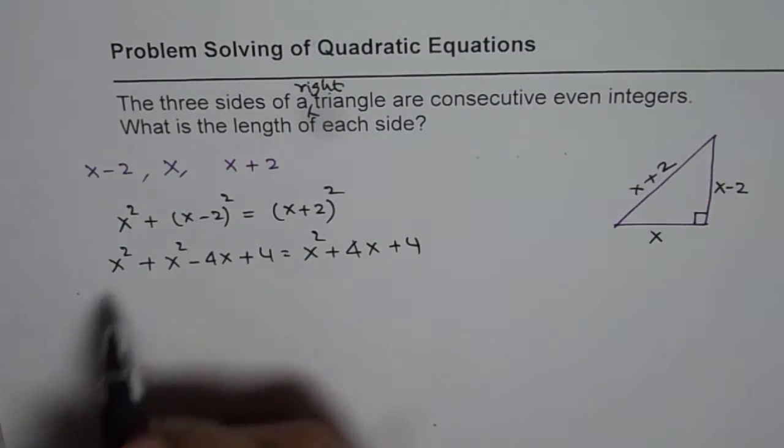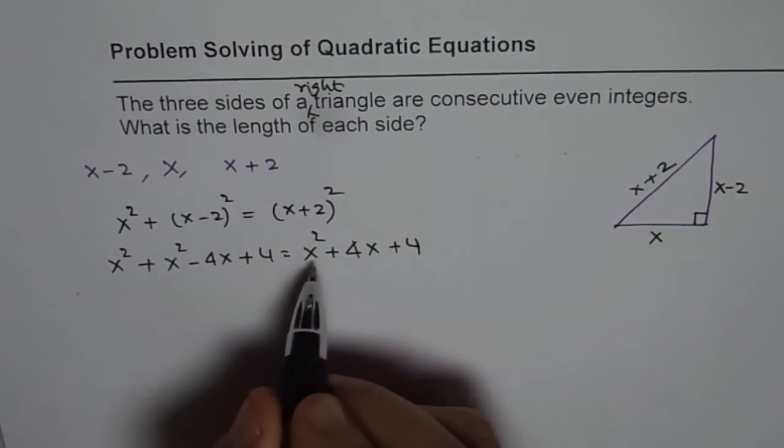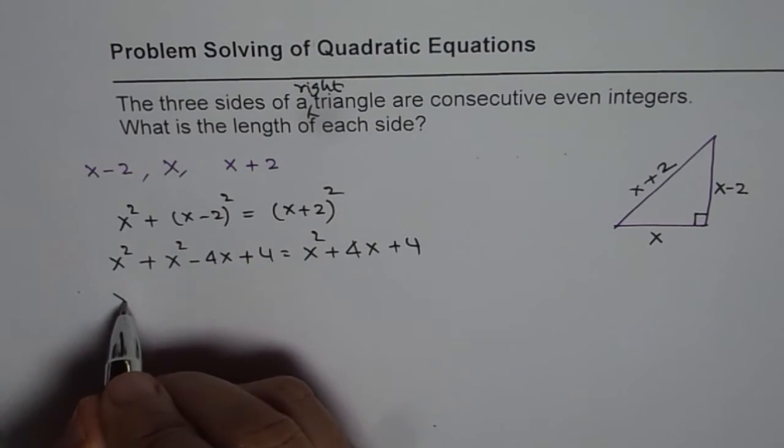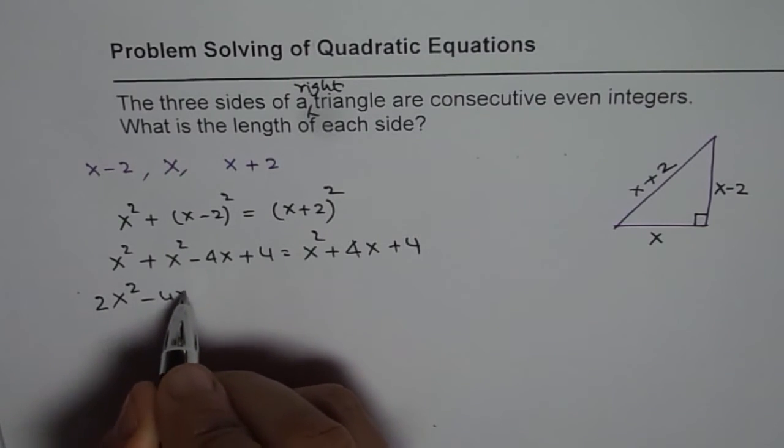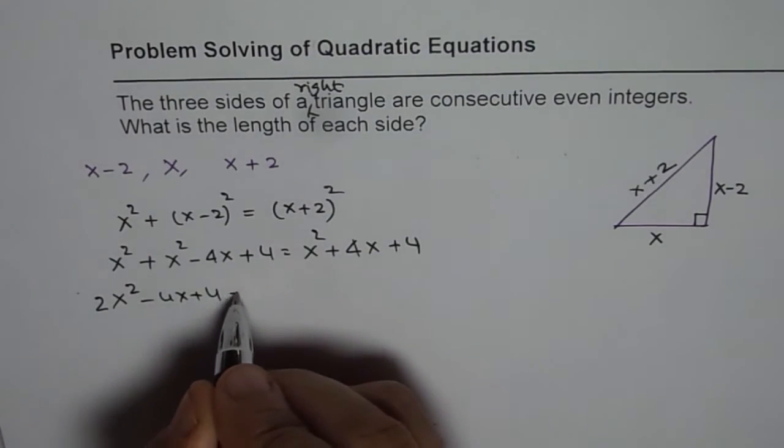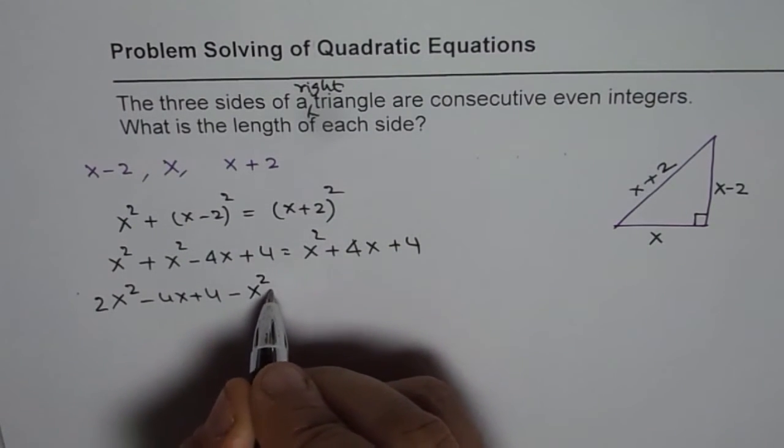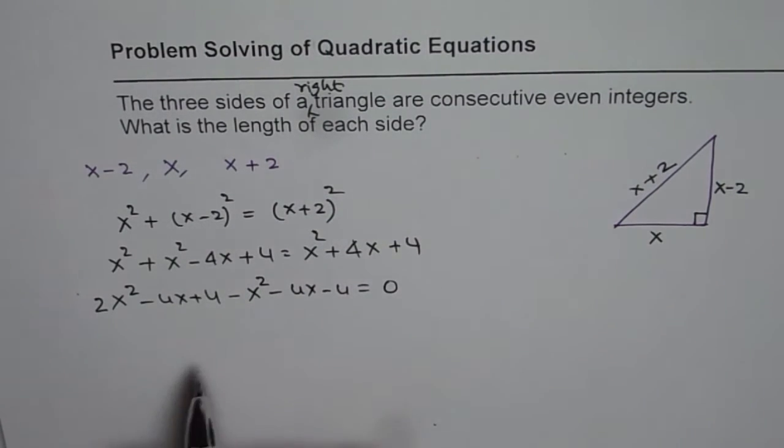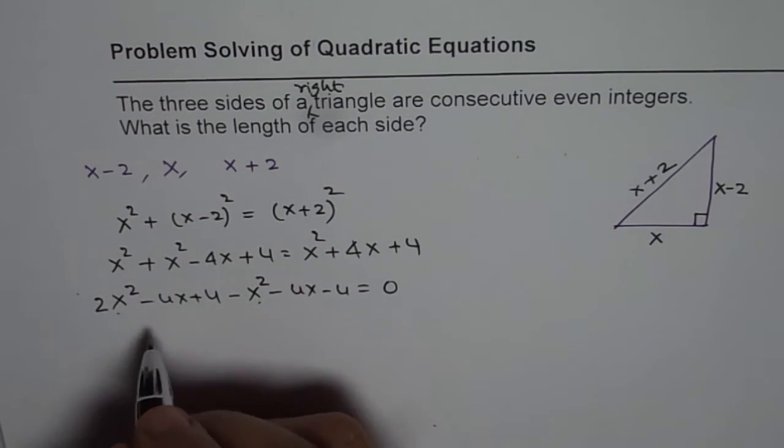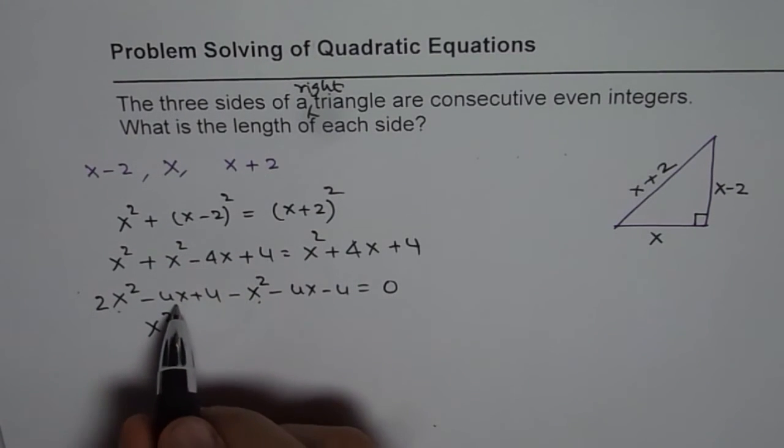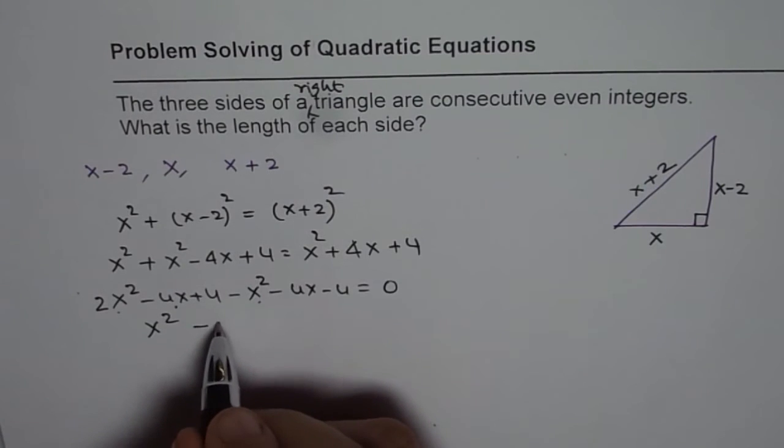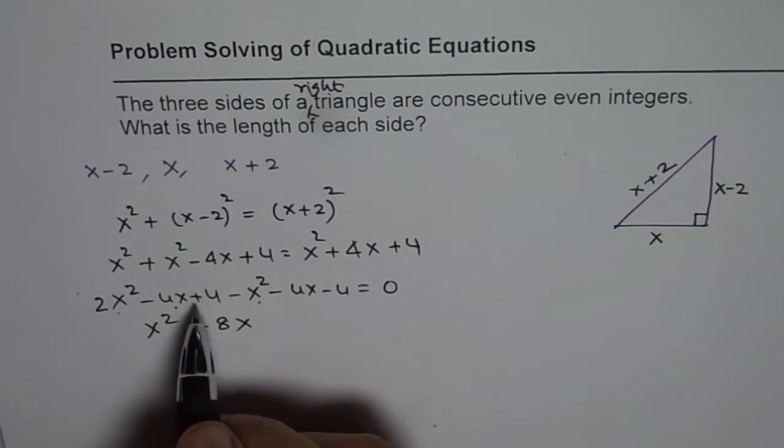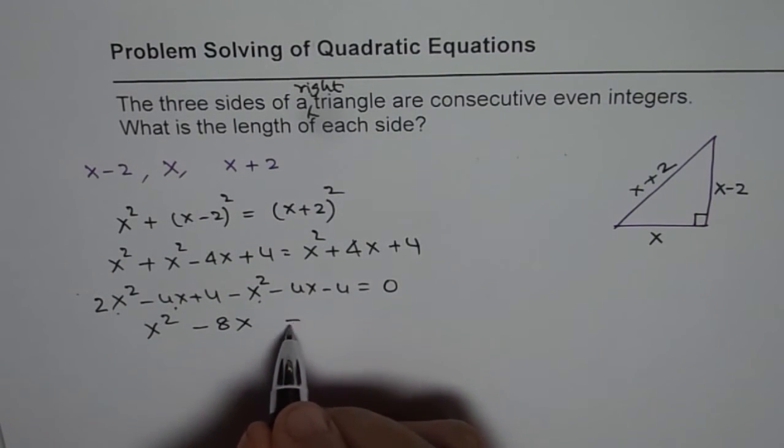Bringing all the terms together. This is 2x squared. Let me write them all together. So we have 2x squared minus 4x plus 4. Now, we will bring these terms: minus 4x minus 4 equals 0. So from here, this combines to give you x squared minus 8x, and plus 4 minus 4 is 0 equals 0.